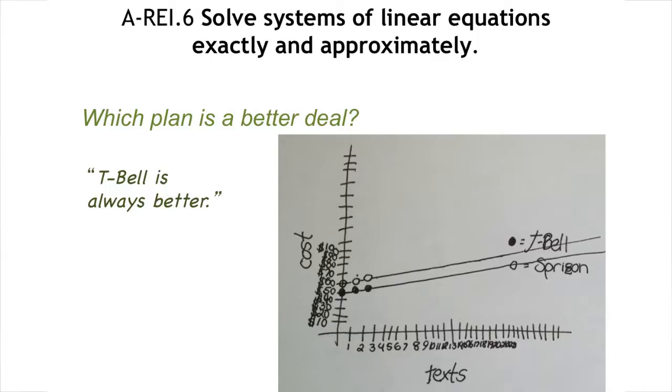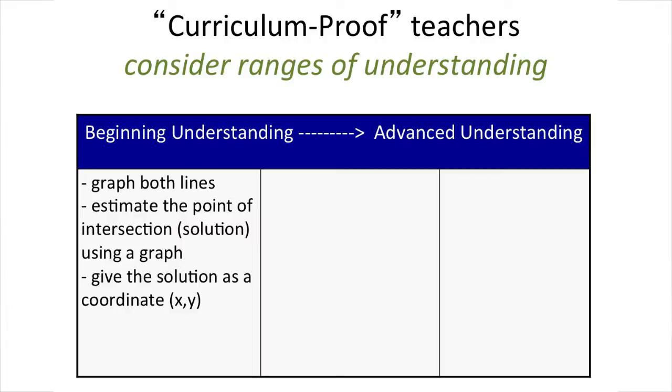Not exactly passing the standard as written. Or what about this student trying to use a graphical approach, a very good approach to thinking about systems, but their precision is a little off? So they have parallel lines and conclude T-Bell is always better. What do we know about what that kid really knows?